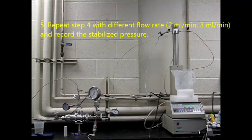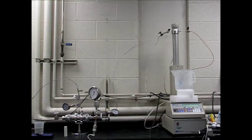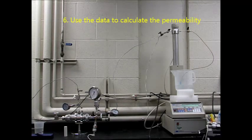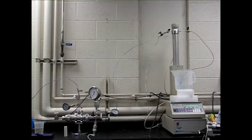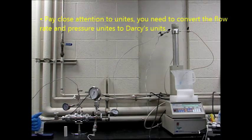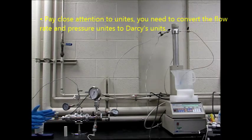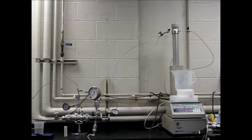Number five, repeat step number four with different flow rates: 2 milliliters per minute and 3 milliliters per minute, and record the stabilized pressures. Finally, use the data to calculate the permeability. Pay close attention to units because you need to use Darcy units in this measurement, so convert the units that you need to convert.